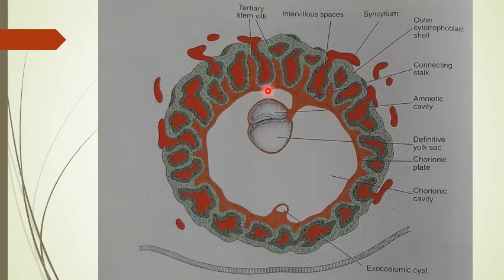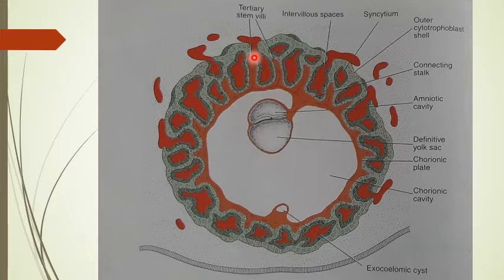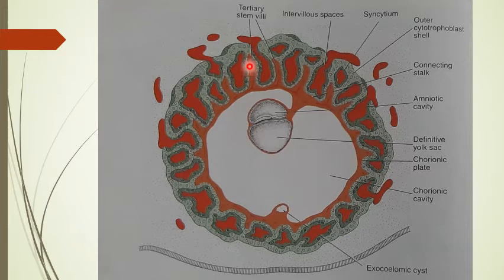The villi communicate with chorionic vessels, which converge toward the umbilical vessels and carry blood to the fetus. A danger exists: the syncytium may penetrate into the decidua, come in contact with the myometrium, penetrate through it, and attach to surrounding intestine, bladder, and other abdominal structures — a condition of choriocarcinoma. To avoid this, the syncytium must be limited, which is done by the cytotrophoblast.